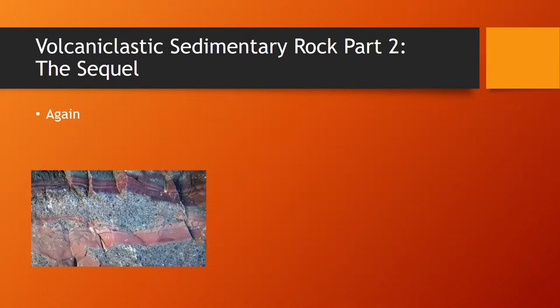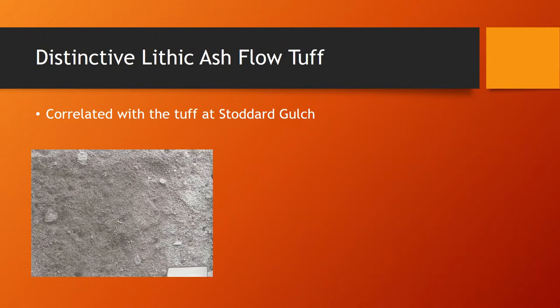After the dacite eruptions, we have volcaniclastic sedimentary rock part two. What happened here is we have most of the clastics and sediment from the previous eruptions starting to form and compact again.